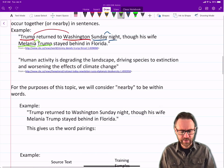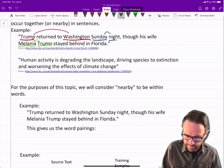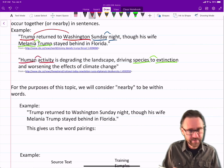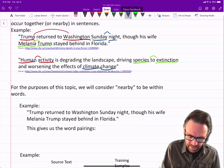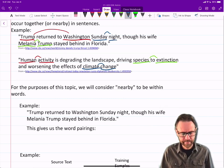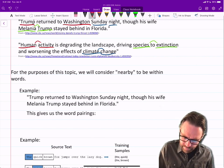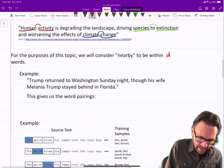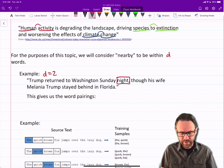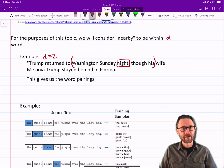We're going to be predicting word pairs. We can get a lot of information from the simple fact that some words often occur together or nearby in sentences. For example, Trump returned to Washington Sunday night, though his wife Melania Trump stayed behind in Florida. Words that you'll often see together are like Trump and Washington, or Sunday night. Those are words that often come together. Melania Trump are words that often go together. Another sentence: human activity is degrading the landscape, driving species to extinction and worsening the effects of climate change. Species and extinction often occur together, I claim. Human and activity often go together, or you know, you could say they show up together quite a lot. Climate and change. These are showing words that are kind of linked semantically.